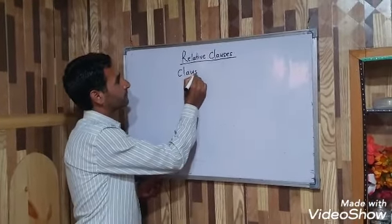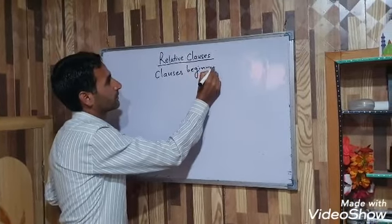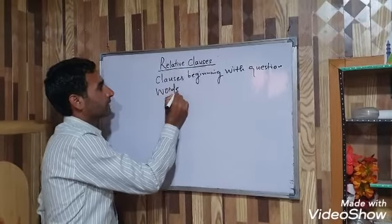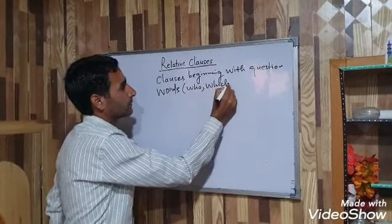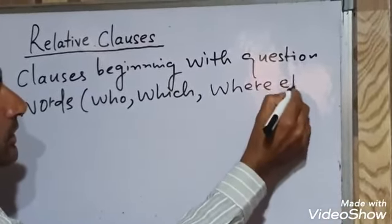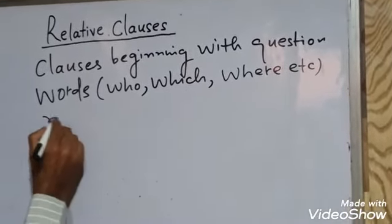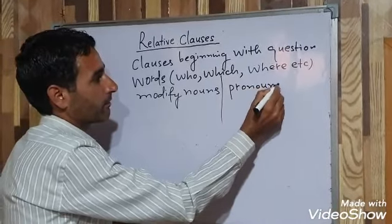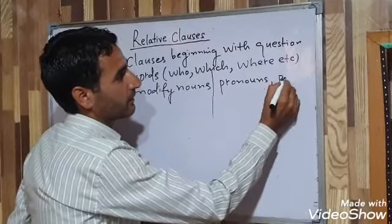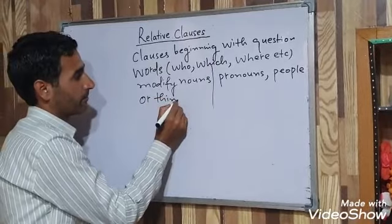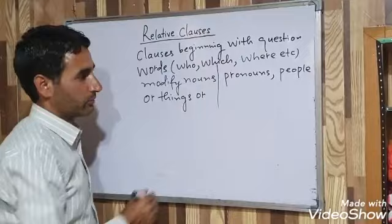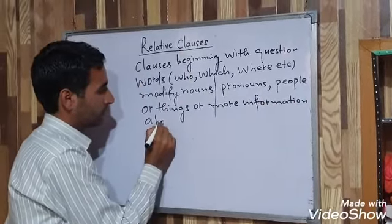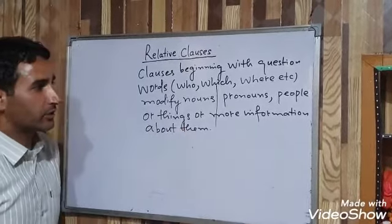So I can write here: Clauses beginning with question words like who, which, where, etc. are often used to modify nouns and some pronouns, to identify people or things, or to give more information about them. Clauses used like this are called Relative Clauses.